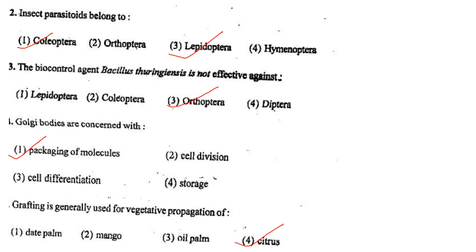Next one: The biocontrol agent Bacillus thuringiensis is not effective against option 1, Lepidoptera; option 2, Coleoptera; option 3, Orthoptera; option 4, Diptera. Answer is option 3: Orthoptera.